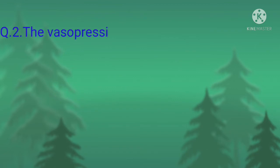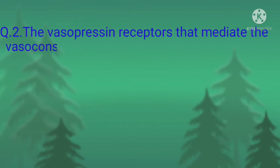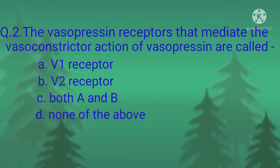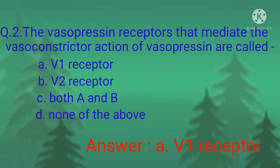Question number two: the vasopressin receptors that mediate the vasoconstrictory action of vasopressin are called — option A, P1 receptor; option B, P2 receptor; option C, both A and B; option D, none of the above. The correct option is option A, P1 receptor.